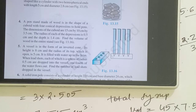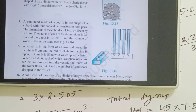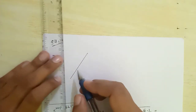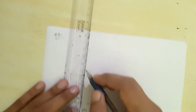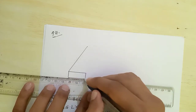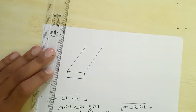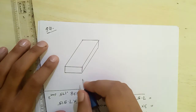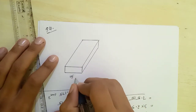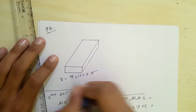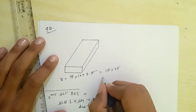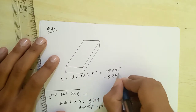A pen stand made of wood is in the shape of a cuboid with four conical depressions to hold pens. The dimensions of the cuboid are 15 cm × 10 cm × 3.5 cm. The radius of each conical depression is 0.5 cm and the depth is 1.4 cm. Find the volume of wood in the entire stand. The cuboid volume is 15 × 10 × 3.5 = 525 cm³.